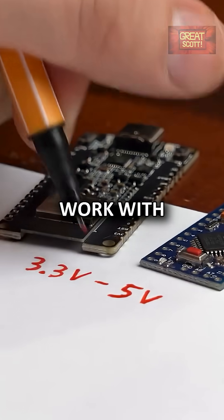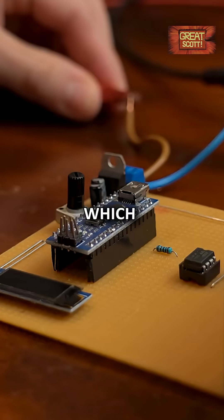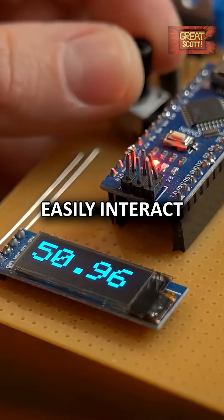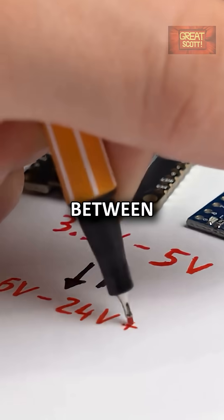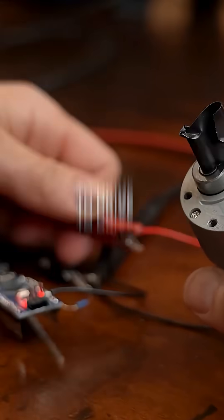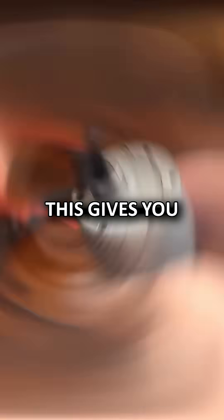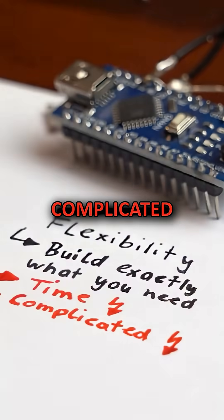Microcontrollers, on the other hand, work with lower voltages between 3.3V to 5V, which doesn't mean they cannot easily interact with sensors or similar devices. But sometimes you need to switch between voltages or, for example, build a power stage yourself to drive a motor. This gives you more flexibility but also costs you more time and can get complicated.